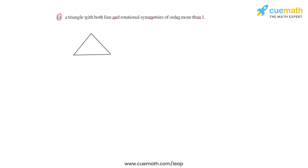The first question is about a triangle with line symmetry and rotational symmetry of order more than one. This is only possible in case of an equilateral triangle. We highlight the three lines of symmetry — the lines which divide the triangle into equal halves. If the triangle is folded about any of these lines, the equal halves will coincide. So the line symmetry for an equilateral triangle is three.